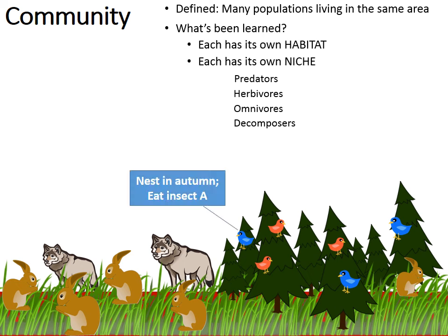Two species of birds can live in the same trees because they have different niches. The bluebirds may build their nest in autumn and eat insect A, while the reddish birds build their nest in spring and eat insect B. Because they're not in direct competition, they coexist. Their niches do not overlap. If their niches were to overlap, you would see competition.